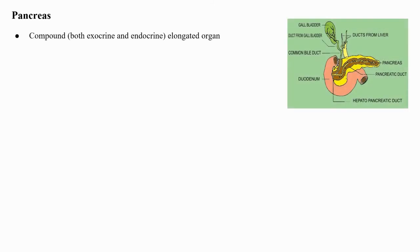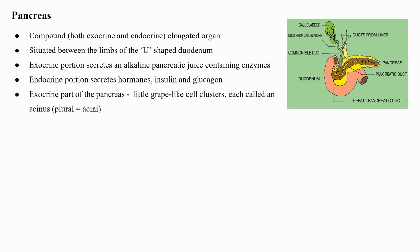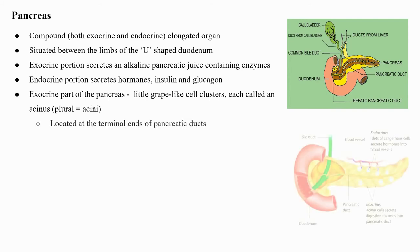The pancreas is a compound organ — both exocrine and endocrine — an elongated organ situated between the limbs of the U-shaped duodenum. The exocrine portion secretes an alkaline pancreatic juice containing enzymes, and the endocrine portion secretes hormones insulin and glucagon. The exocrine part arises as little grape-like cell clusters each called an acinus (plural: acini), located at the terminal ends of pancreatic ducts.